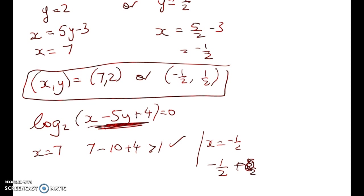Minus 5 over 2, because I'm substituting y, plus 4, which is also just greater than 0.